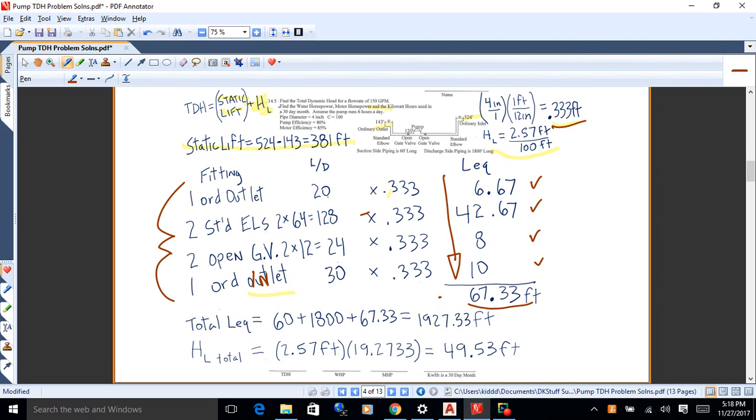We've also got 60 feet of pipe on the left of the pump, and 1800 feet of pipe to the right. So we just add everything up. 60, 1800, 67.33, we get 1927.33 feet. The head loss is 2.57 feet per hundred. We got that for the four inch pipe C100 and 150 gallons per minute. Multiply that by the number of hundred foot lengths of equivalent lengths of pipe, 19.27, you get 49.53 feet. So that's the total head loss in the system.